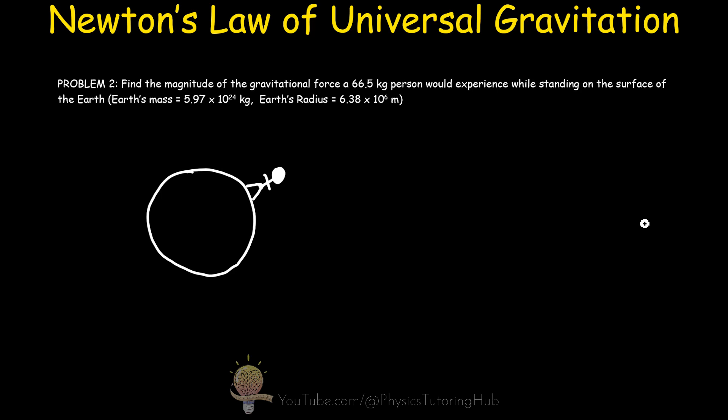So in problem two, we need to find the magnitude of the gravitational force that a 66.5 kilogram person would experience while standing on the surface of the earth. And the earth's mass is 5.97 times 10 to the 24 kilograms. And the radius of the earth is 6.38 times 10 to the 6 meters.